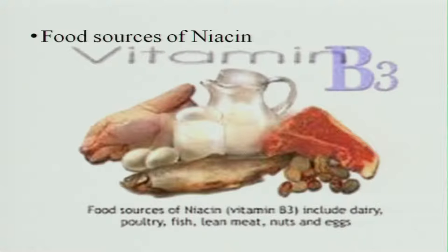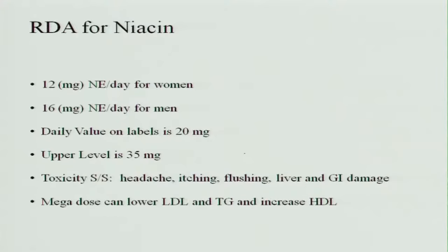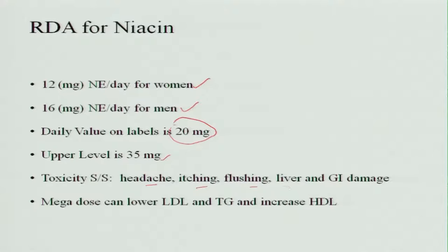Additional food sources of niacin include meat, fish, poultry, nuts, eggs, and milk. The recommended dietary allowance for niacin is linked to energy metabolism, similar to thiamine and riboflavin. For women it is 12 mg and for men 16 mg; about 20 mg on average is sufficient. The upper limit is 35 mg, and toxicity from excess niacin results in headache, itching, flushing, and liver and gastrointestinal damage.